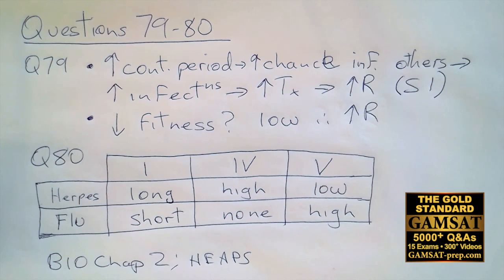Question 80. So the question talks about genital herpes has a long contagious period. So I put long for Roman numeral one, reduce fitness of the virus after it becomes drug resistant. So reduced fitness. Now we have to be very careful and read Roman numeral four carefully, the degree to which development of resistance reduces. Okay, so if we have reduced fitness of the virus, that means the degree to which resistance reduces is high. So it reduces to a significant extent.